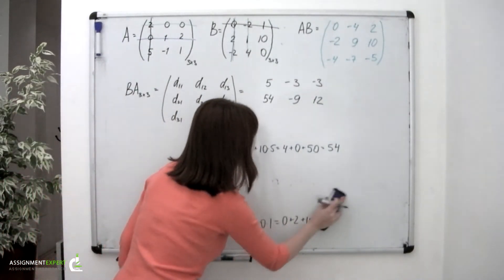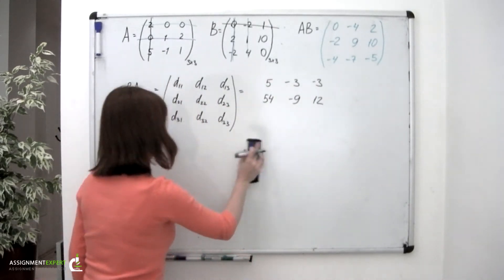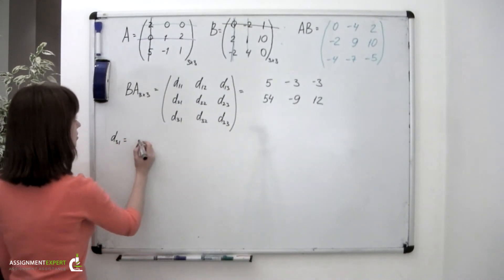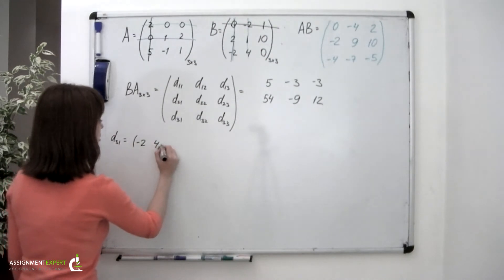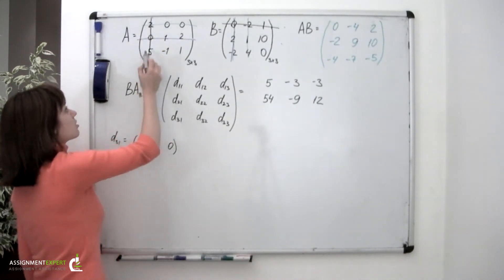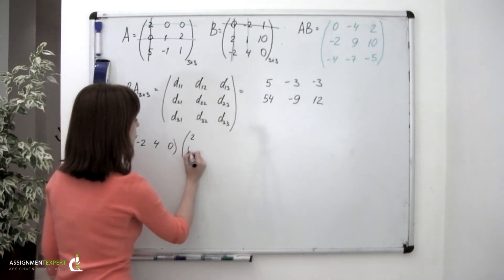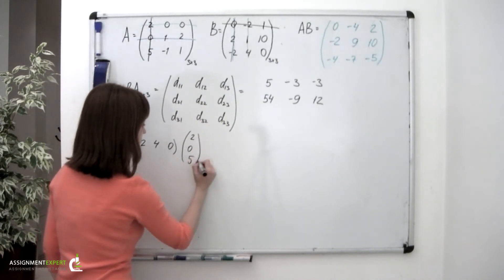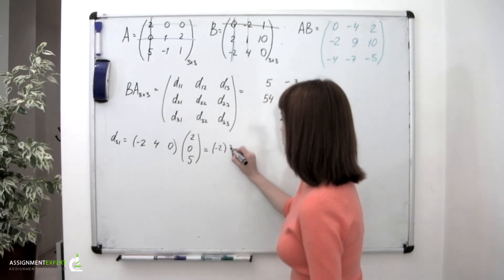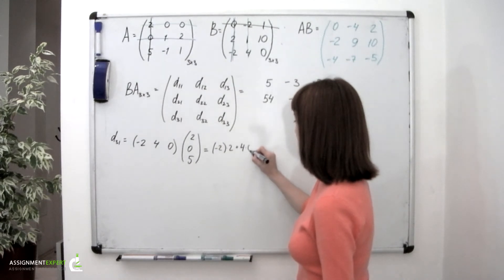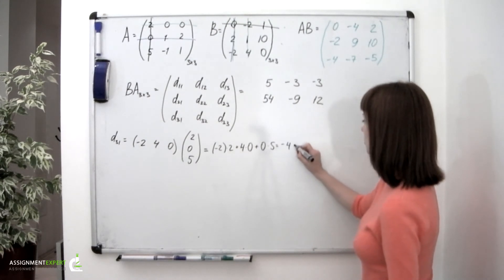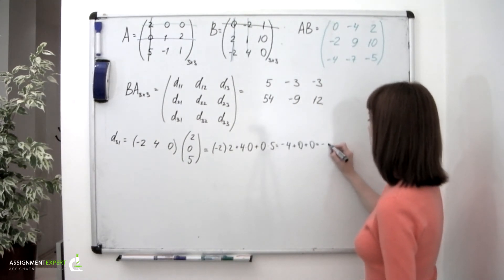Moving on to the last row. D sub 3,1 equals: we take the third row of matrix B, which is negative 2, 4, 0, and multiply it by the first column of A, which is 2, 0, 5. That gives negative 2 times 2 plus 4 times 0 plus 0 times 5, which is negative 4 plus 0 plus 0, equal to negative 4.